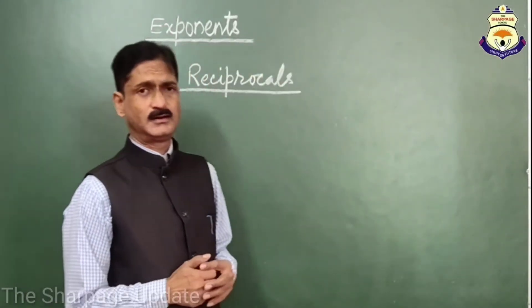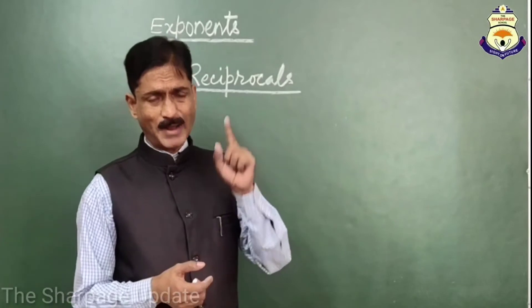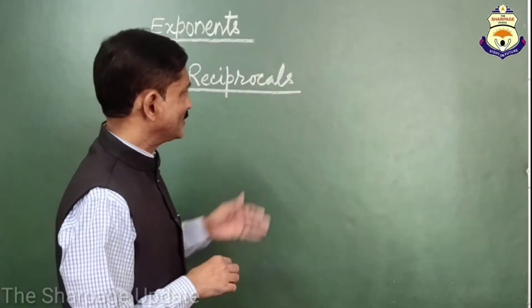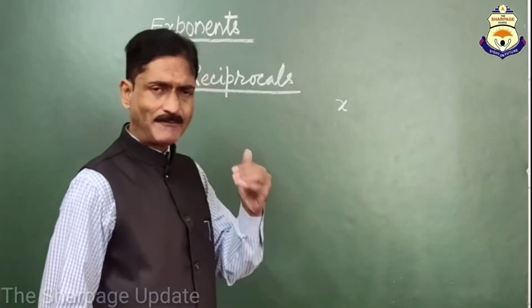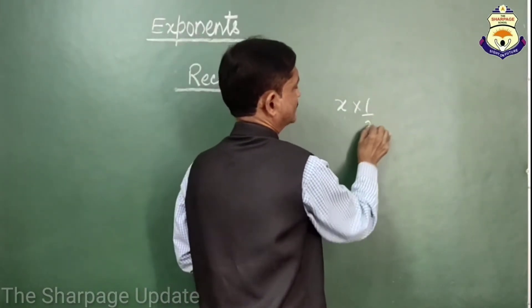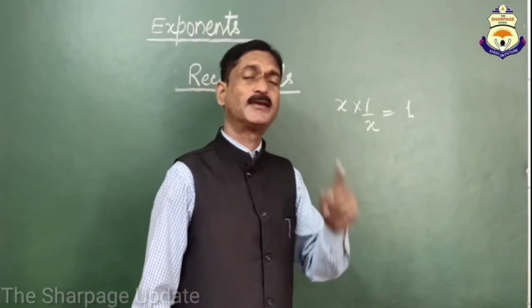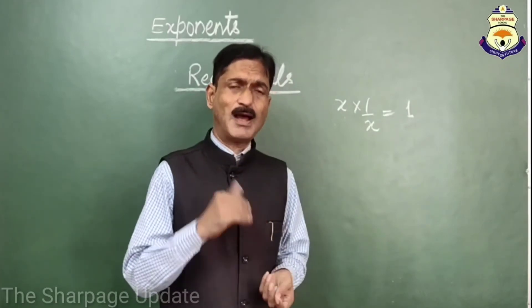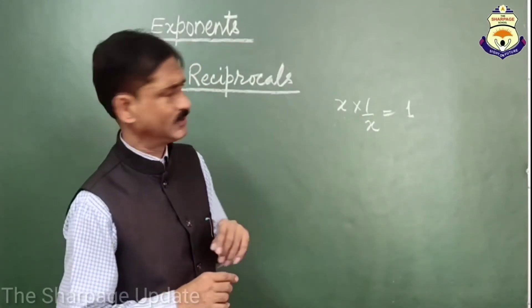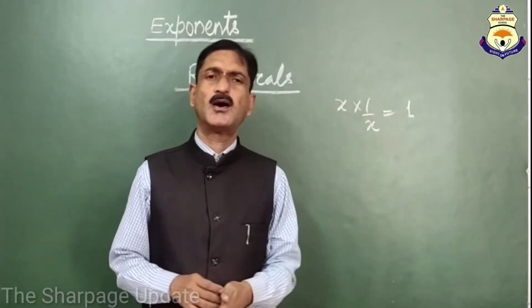Now friends, the meaning of reciprocal — what does reciprocal mean? The reciprocal is that number by which, if a given number is multiplied, the result will be 1. Suppose we have a number x and we have to find the reciprocal of x. When we multiply x by 1/x, we get 1. So 1 upon x is the reciprocal of number x. The reciprocal is that number by which we multiply the given number to get a result of 1. You can see that x × (1/x) = 1, so 1/x is the reciprocal of x.